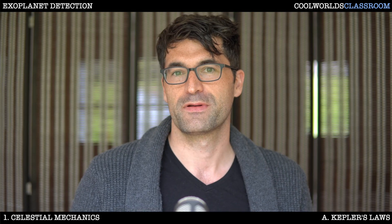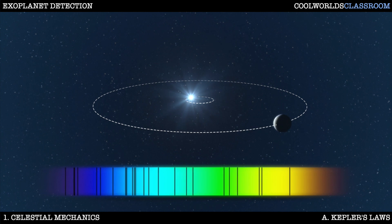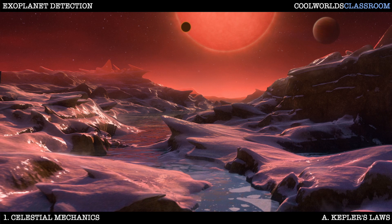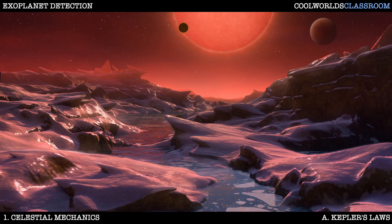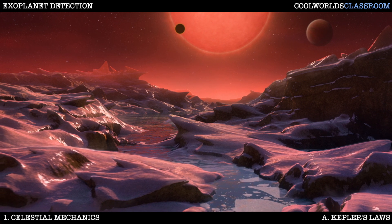So where to start? Well, barring rogue worlds, exoplanets orbit stars and those orbits are central to how we interpret exoplanet data. Understanding the orbit of exoplanets is a necessary foundation before we can get into the details of exoplanet detection. Moreover, an understanding of the orbit is critical not just for detection but for everything from surface habitability to formation modelling. So pretty much every exoplaneteer will need a mastery of this core skill.